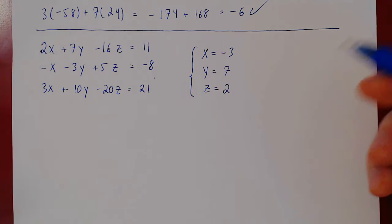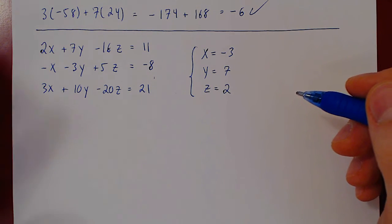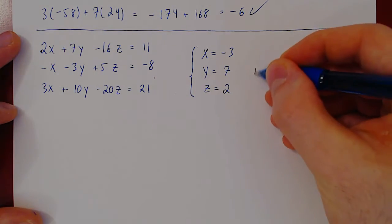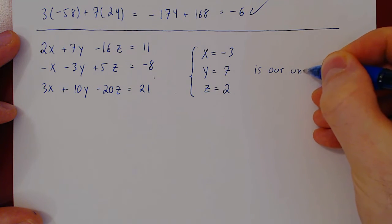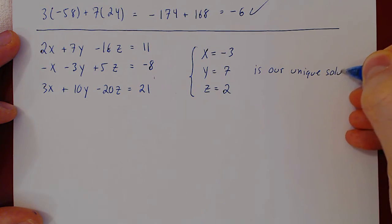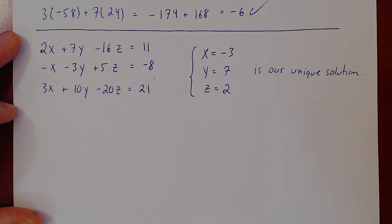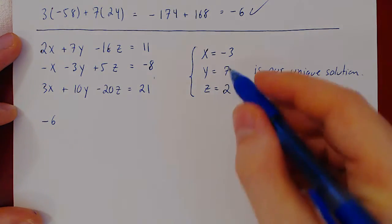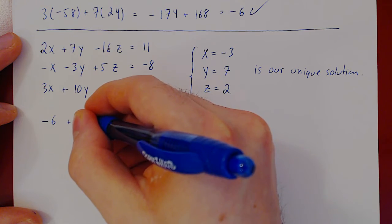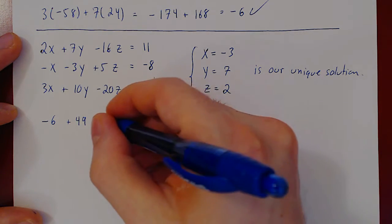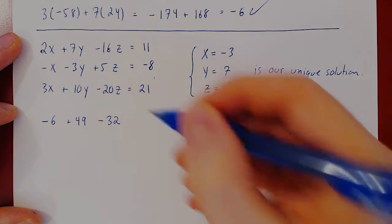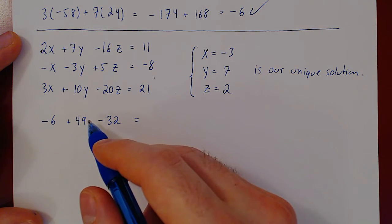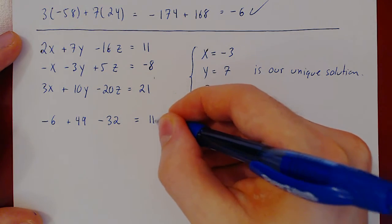Not difficult, just a bit on the long side. Let's at least verify that this is our unique solution to this linear system. So 2 times x, 2 times negative 3, negative 6, plus 7 times 7, 49, minus 16 times 2, minus 32, equals. Well let's see, 49 minus 6 is 43, minus 32 is indeed 11. Check.